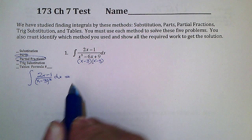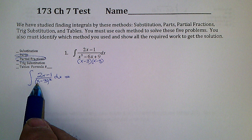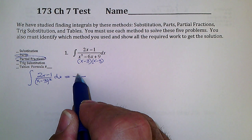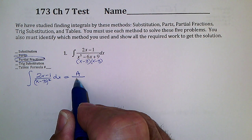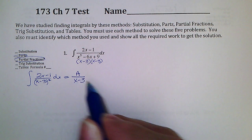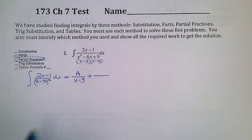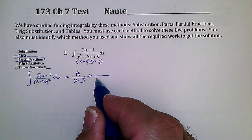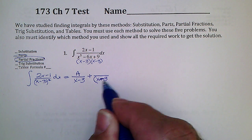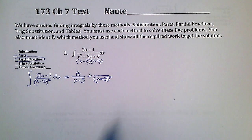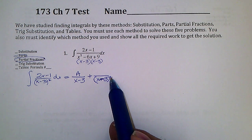When you have a degree-1 linear factor, you put just a simple A over it — no x's, no ax+b, nothing else over it. Plus, when they repeat, you put one term over (x−3) and another over (x−3)². You do it over the squared. When they repeat, you always put the squared.